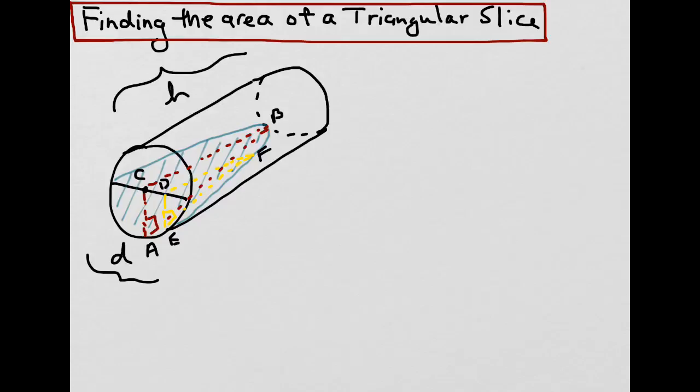And we know that the area of a triangle is half the base times the height. So the area of triangle ABC would equal half the base, and the base in this case would be AB, times the height, which would be AC. And we know that AB along the bottom there, that distance will be the same distance as the height of the cylinder. So we can substitute AB with H, the height of the cylinder.